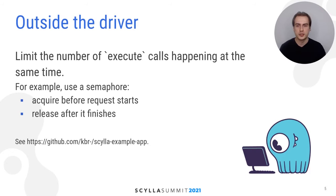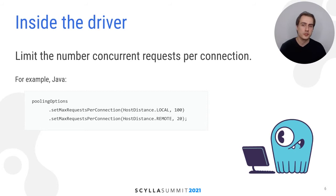Another method is bounding the number of concurrent requests per connection, and this is done by configuring the driver. For example, in Java use the pooling options class as shown. There are two limits: one for the local DC and one for remote DCs. You want the driver to mostly contact the local DC, so this limit will be higher.